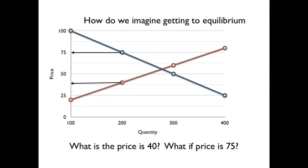What about seats at the University of California? Those are rationed — rationed by your major, by GPA. We make scarce seats available, some people get in, some don't, not even based purely on willingness to pay. Where the price is $75 — you know, excess supply — we have too much being produced and not being used up.